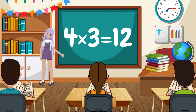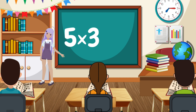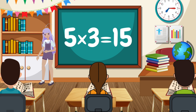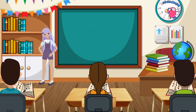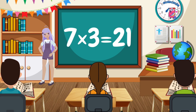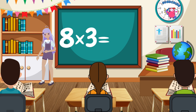3 multiplied by 3 equals 9. 4 multiplied by 3 equals 12. 5 multiplied by 3 equals 15. 6 multiplied by 3 equals 18. 7 multiplied by 3 equals 21. 8 multiplied by 3 equals 24.